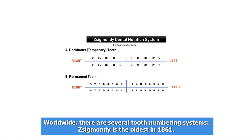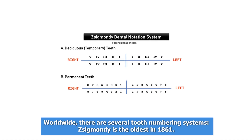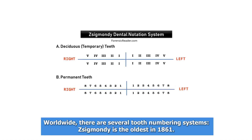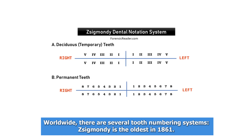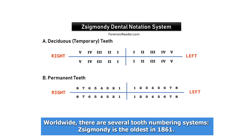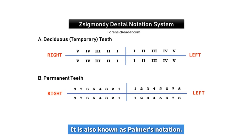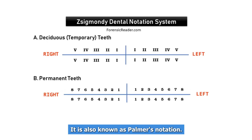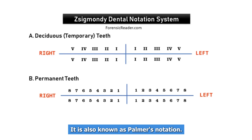Worldwide, there are several tooth numbering systems. Zigmundi is the oldest, dating to 1861, and is also known as Palmer's Notation.